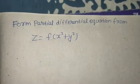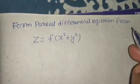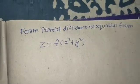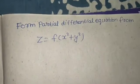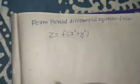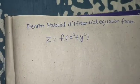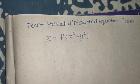Hello everyone, I hope you are finding yourself in the best of health. We have to form a partial differential equation from z equals f of x² + y². The method we will use is to eliminate this arbitrary function to get our partial differential equation. We find del z by del x, find del z by del y, and try to eliminate f.